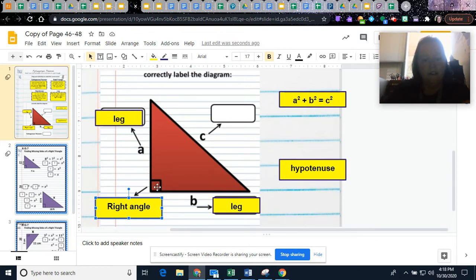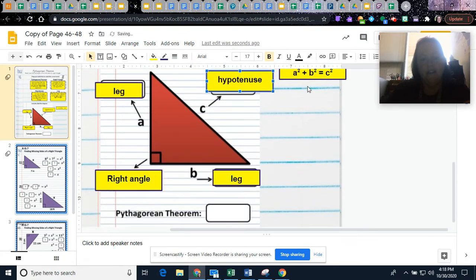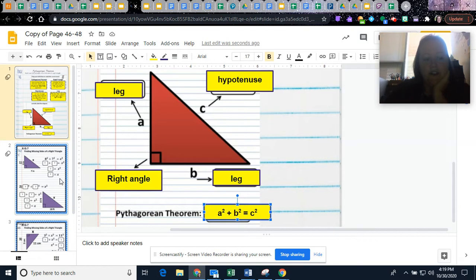And then C is the hypotenuse. Here's your right angle, the opposite of that, the one that's opposite of the right angle, that's going to be the hypotenuse. That's always the longest side. Your Pythagorean theorem, here's your formula, A squared plus B squared equals C squared. Now we're going to try some examples.